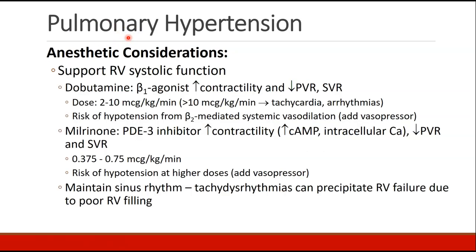Our next goal is to support right ventricular systolic function. This can be accomplished with an inotrope like dobutamine, a beta-1 agonist that increases contractility while decreasing pulmonary and systemic vascular resistance. It is dosed at 2 to 10 micrograms per kilogram per minute as an infusion. At doses above 10 mcg/kg/min, we see increased tachycardia and arrhythmias, which are dangerous for patients with severe pulmonary hypertension. Dobutamine also carries a risk of hypotension due to beta-2-mediated systemic vasodilation, in which case a vasopressor would need to be added.